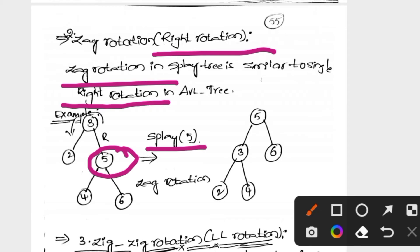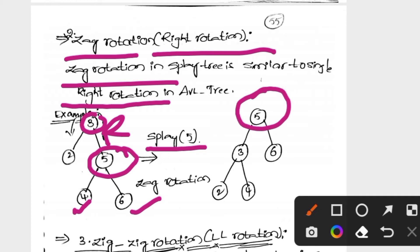I will make 5 the root element by performing the zag rotation. If you want to make a rotation, you perform the zag rotation, which moves elements to the left direction. Element 5 has two children — a left child and a right child.